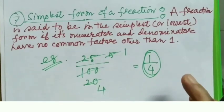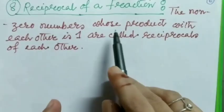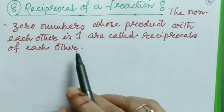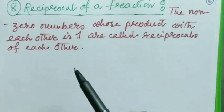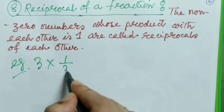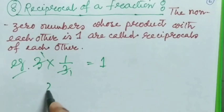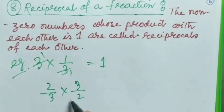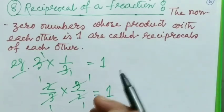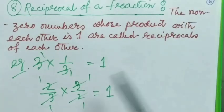Next, reciprocal of a fraction: non-zero numbers whose product with each other is 1 are called reciprocals of each other. For example, 3 and 1/3 — if we multiply them, we get 1. Another example: 2/3 and 3/2 — we can cancel and get 1. So 2/3 and 3/2 are also reciprocal fractions. Their product must equal 1.